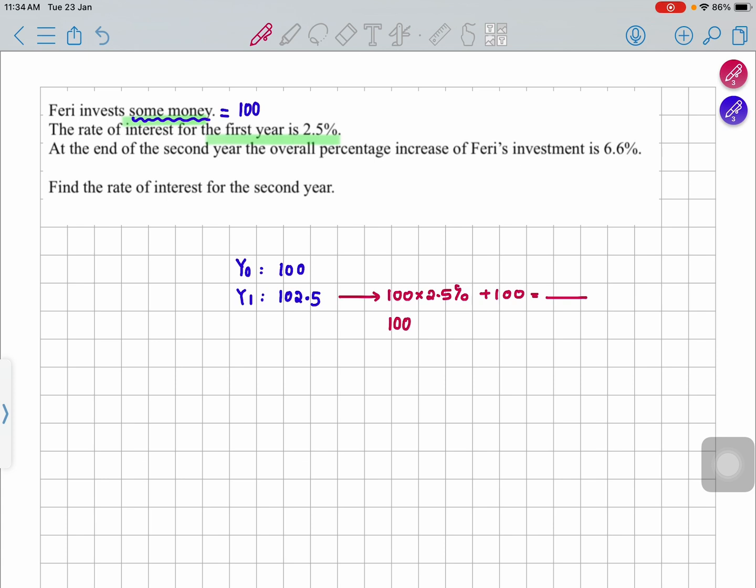$100 times 102.5%. It means you're taking this as 100% and you add the 2.5%, it will give you the 102.5% directly. Okay, now we go back to our question.